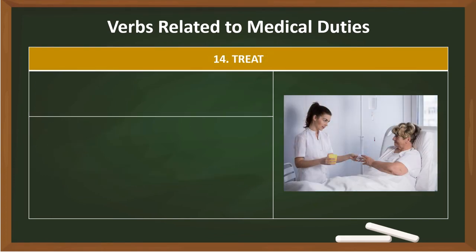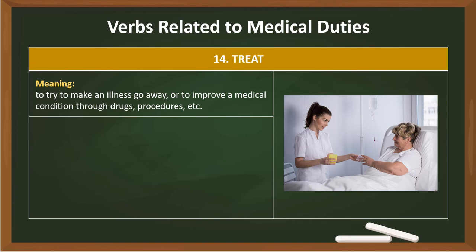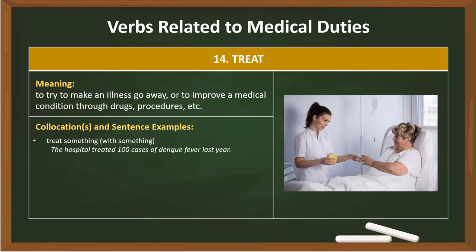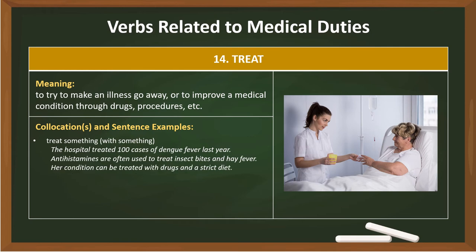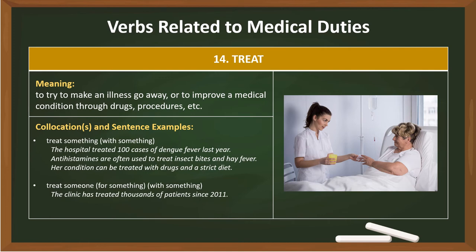14. Treat. Meaning: to try to make an illness go away, or to improve a medical condition through drugs, procedures, etc. Collocations: Treat something with something — The hospital treated 100 cases of dengue fever last year. Antihistamines are often used to treat insect bites and hay fever. Her condition can be treated with drugs and a strict diet. Treat someone for something — The clinic has treated thousands of patients since 2011. The students involved in the accident were treated for head injuries. They treated her for cancer with chemotherapy.